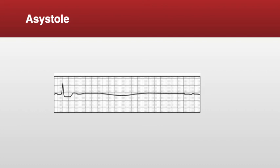An asystole rhythm, also called an agonal rhythm or flat line, means when you see this rhythm on your monitor, you need to check the patient immediately — they could have easily pulled themselves off the monitor. Always check the patient first, then check your equipment. Sustained asystole results in death. If you go in and the patient is fine and talking to you, they just pulled off the monitor leads — put them back on. However, if the patient is unresponsive and has no pulse, call a code and start CPR immediately.